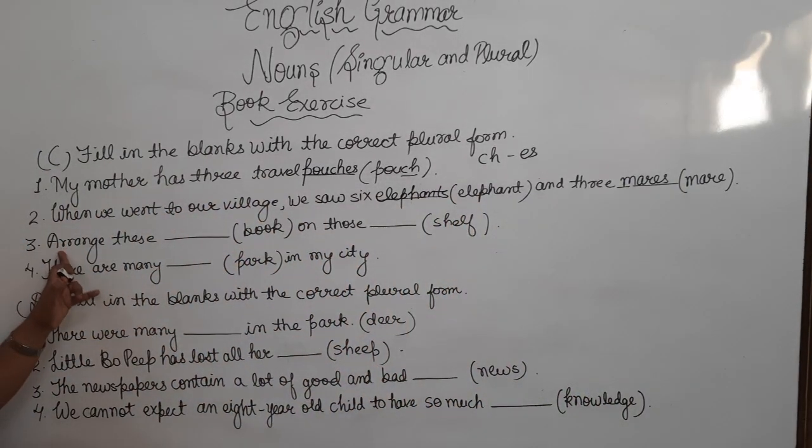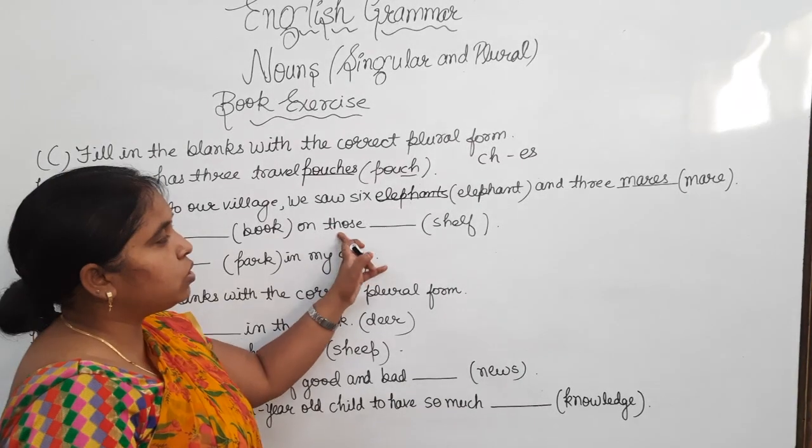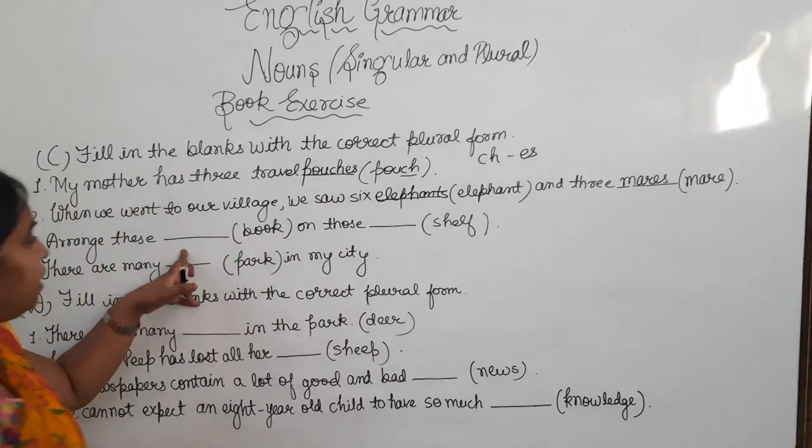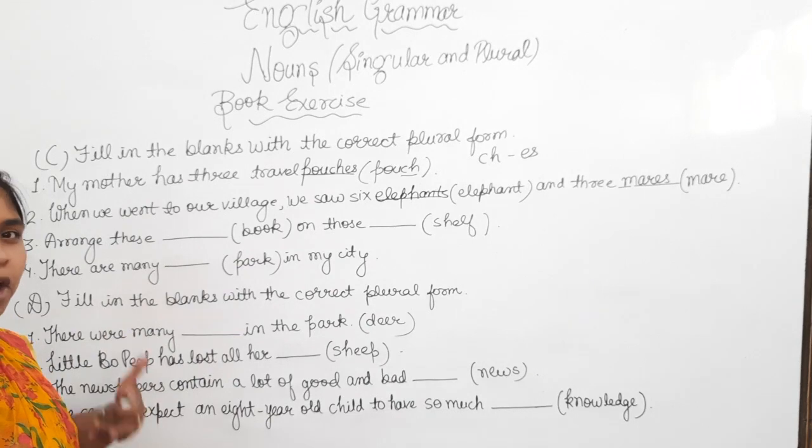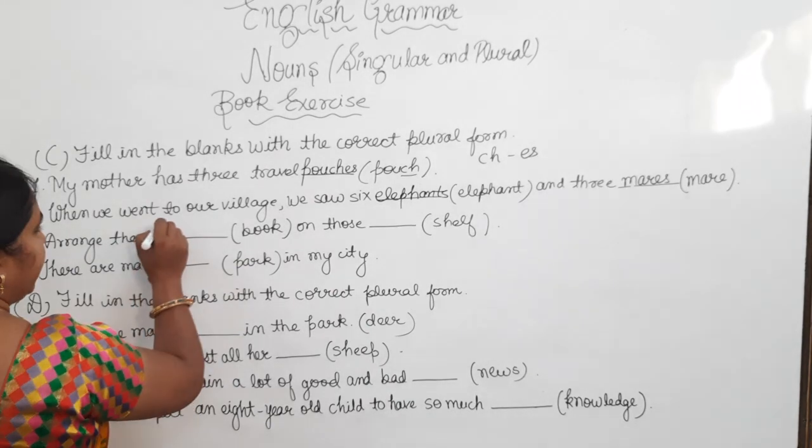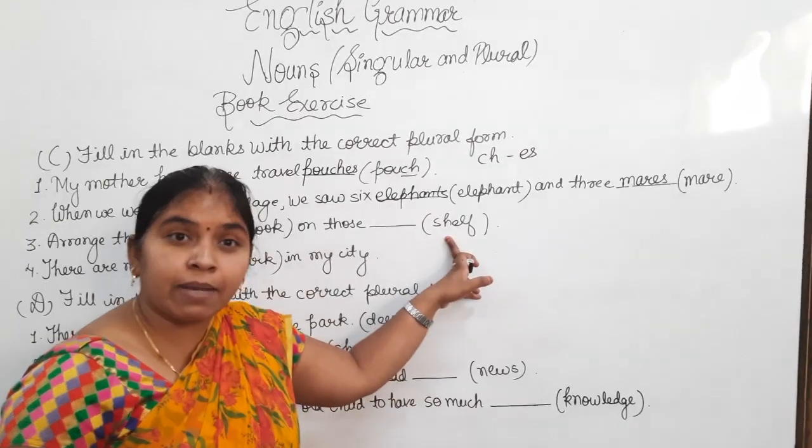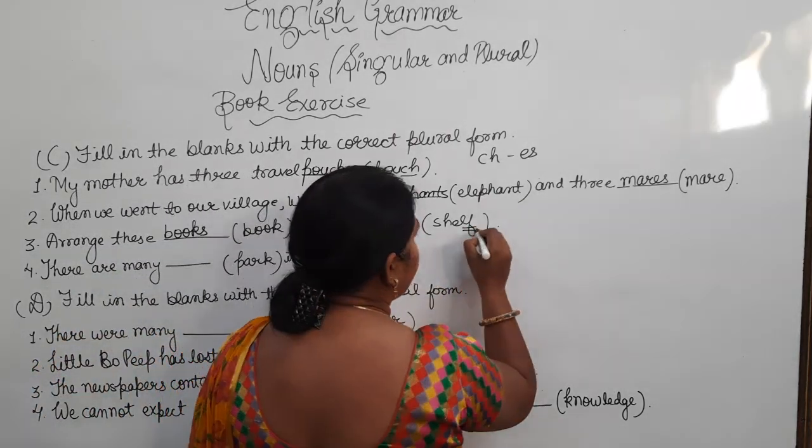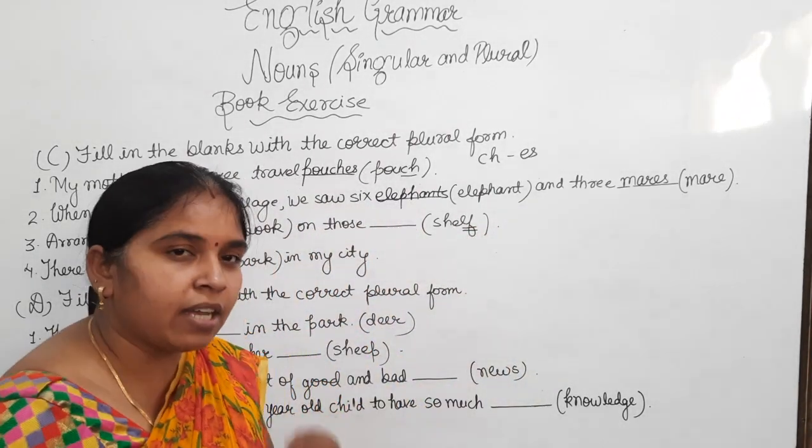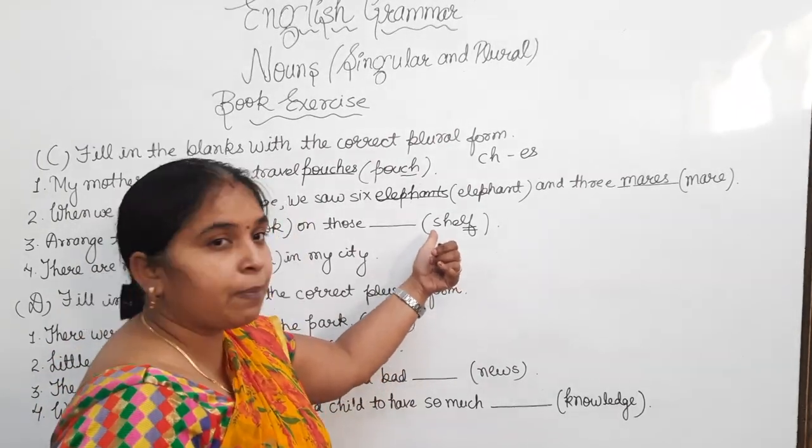Now, next one, arrange these dash on those dashes. Now, in the first bracket, the word is book. And the plural of book is books. We add only S to the singular noun. Now, here, in the second bracket, the word is shelf. And the last alphabet is F. And as per the rule, if you remember the rules we have done in our previous class.